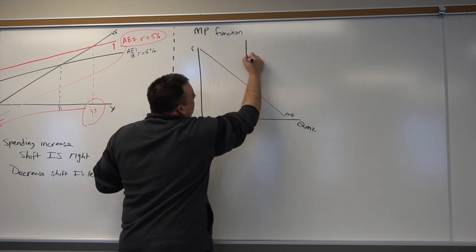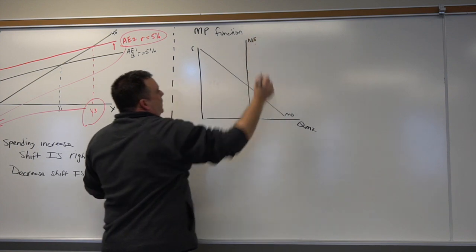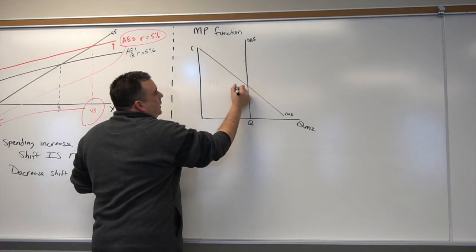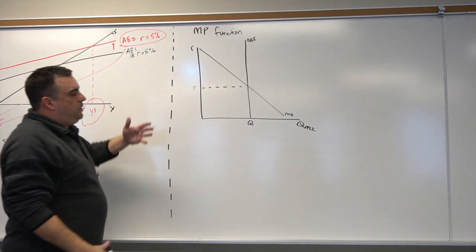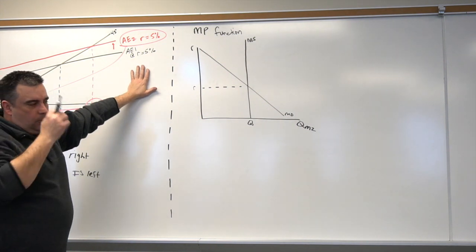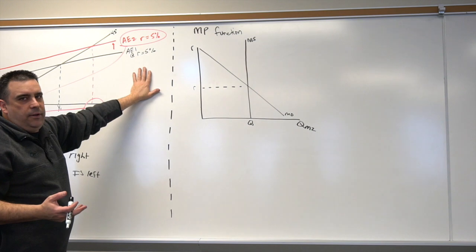The money market looks like this. Remember, money supply is vertical at some Q because the Federal Reserve sets the money supply, and then that gives us some targeted R value. Now you'll notice that we do not have real GDP on here, so that's actually what we want to capture.